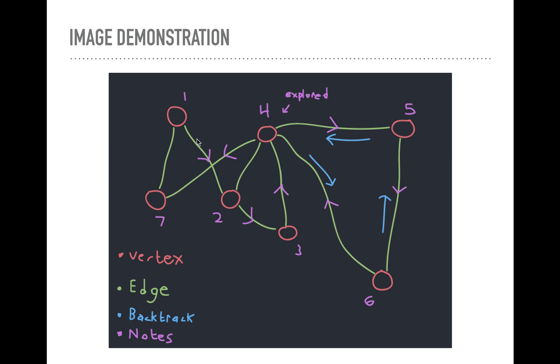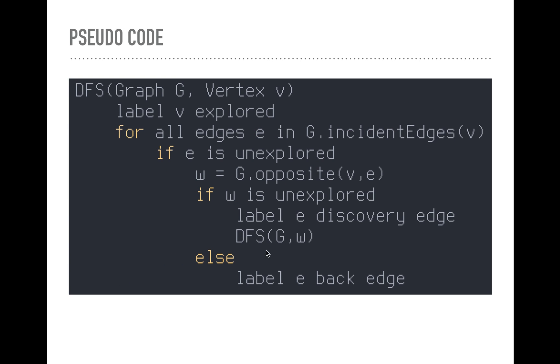But from 1 to 2, for example, that's just new. We'll label it a discovery edge. And so we'll recurse, and this recursion is how we'll continue through, and how we'll back up.